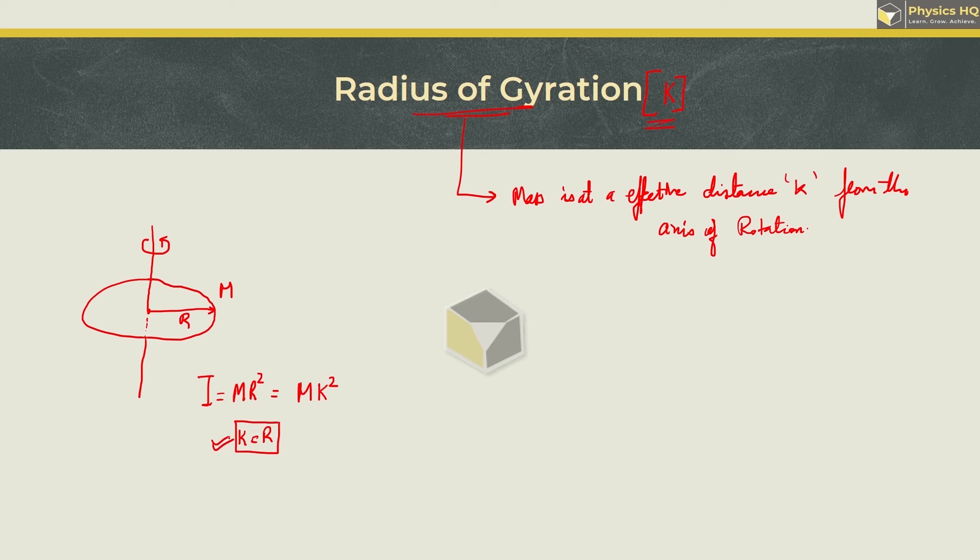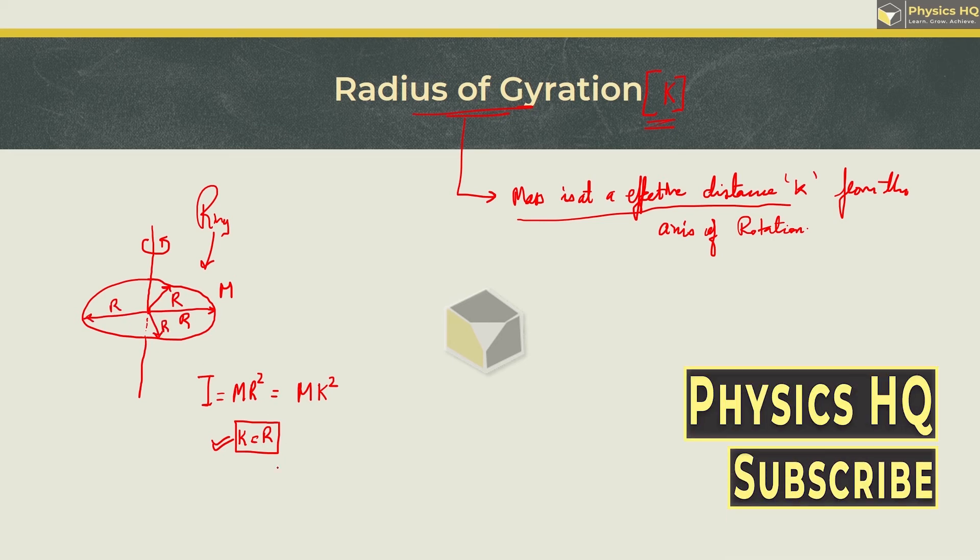Let us try and understand what this means. As we said, k is nothing but effective distance of the mass from the axis of rotation. Now in the case of ring, the entire mass is situated at distance r from this axis of rotation, so here we got r is equal to k.